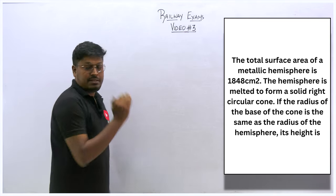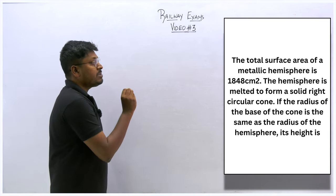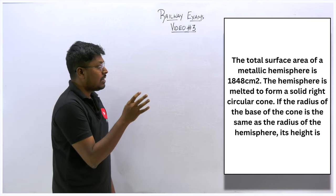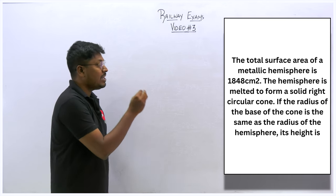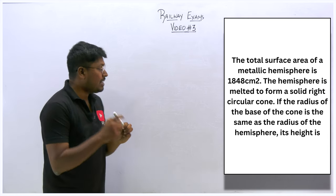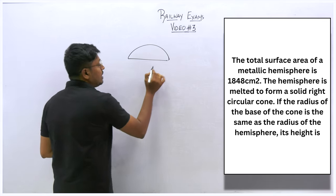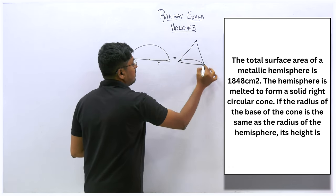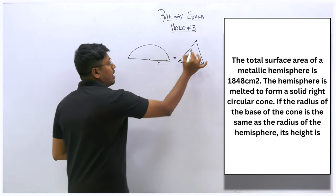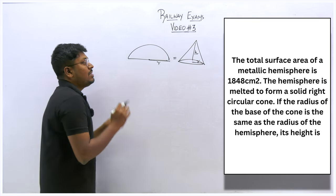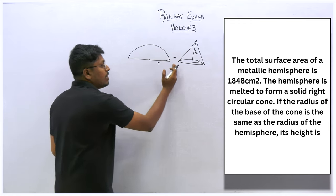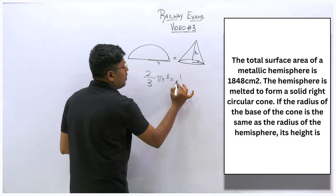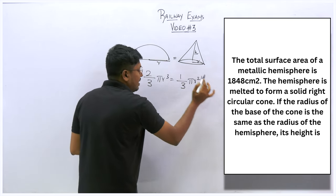Next question: the total surface area of a metallic hemisphere is 1848 cm². The hemisphere is melted and made into a right circular cone. If the radius of the hemisphere equals the radius of the cone, find the height. This is a melting concept, so volume of hemisphere equals volume of cone: 2/3 πr³ = 1/3 πr²h.